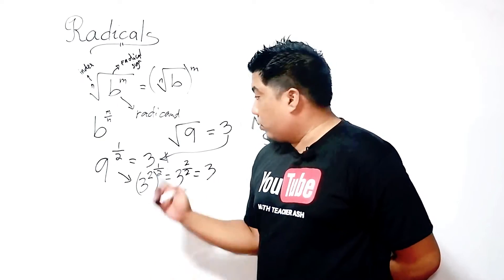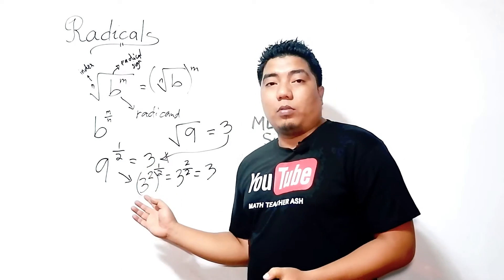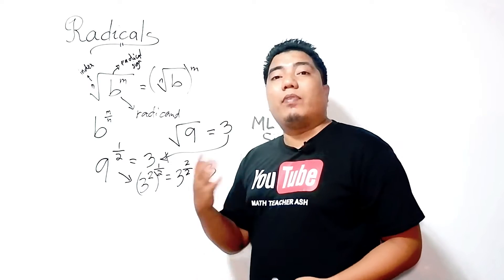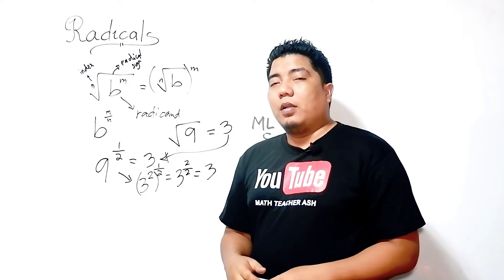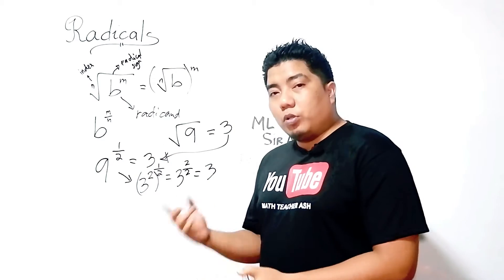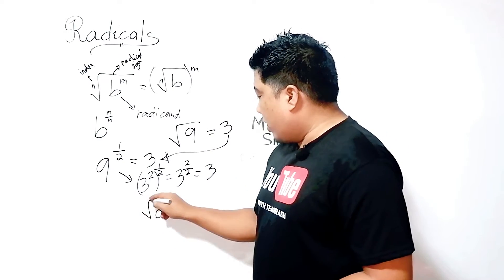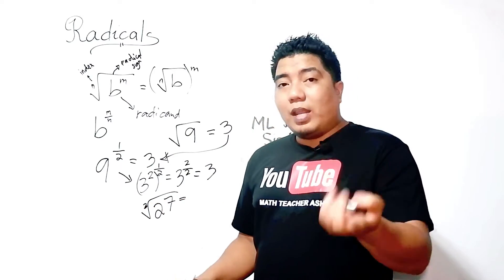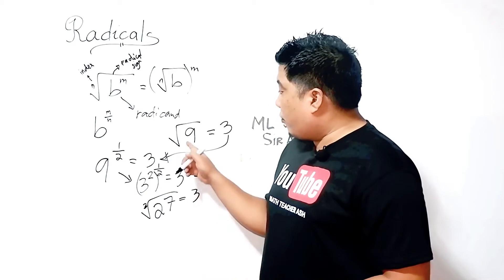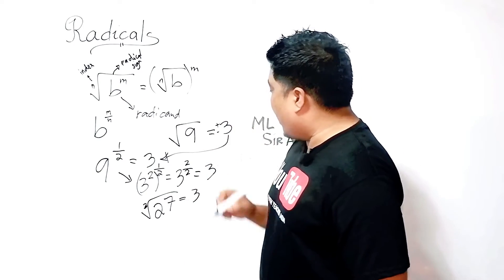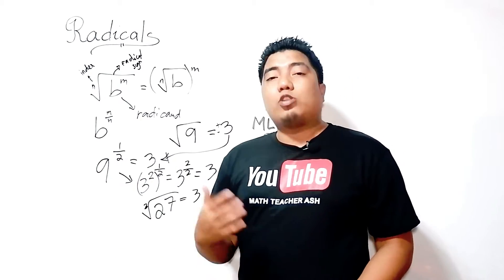Remember: in getting the square root for positive radicands, we can consider both the positive and negative as the root. Given that our n is an even number, we get two roots. But in any case where n is an odd number — like 3 or 5 — our root can only have one principal root. For example, if we have 27 and we get its cube root, we only have one answer, which is positive 3. However, for 9, we can have positive and negative 3, because positive 3 times positive 3 is 9, and negative 3 times negative 3 is also 9.